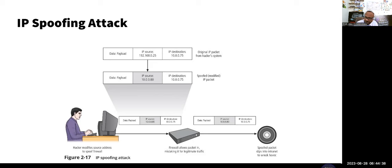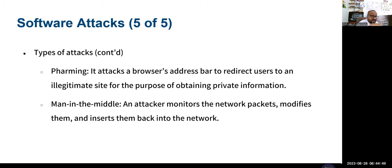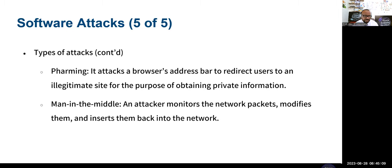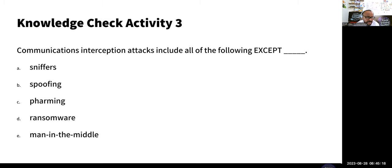IP spoofing is where the attacker makes their IP address appear to be the same as someone else's. Pharming involves redirecting users to a fraudulent but legitimate-looking site for the purpose of obtaining their private information. Man-in-the-middle — now called an on-path attack — is where I insert myself between two legitimate nodes or people who are communicating between themselves.